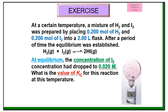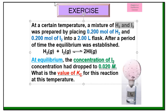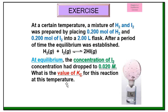Based on this exercise: at a certain temperature, a mixture of hydrogen and iodine was prepared. There are two types of mixture — one is iodine, one is hydrogen — and the number of moles of both substances are given, with volume of 2 L. After a period of time, equilibrium was established and the equation is given. Always highlight the keywords 'at equilibrium.' At equilibrium means the final stage already — so the concentration of iodine had dropped to 0.020 molar. What is the value of Kc for this reaction at this temperature?